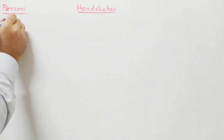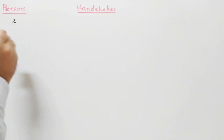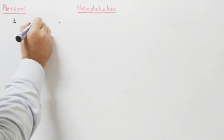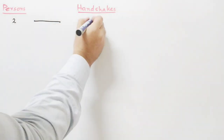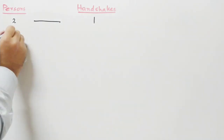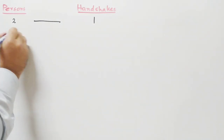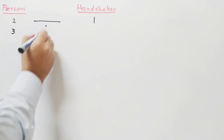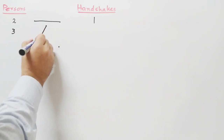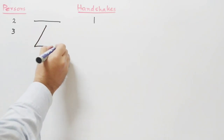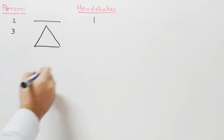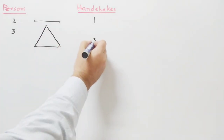Suppose we have two persons, so there is one handshake. If we have three persons, the handshakes are one, two, three. So there are three handshakes.